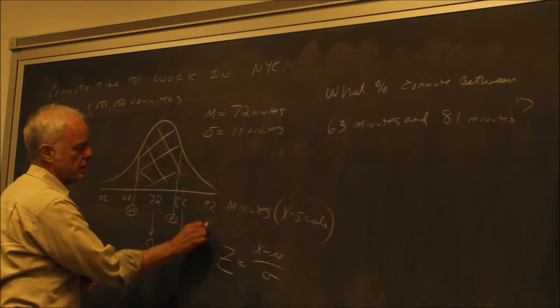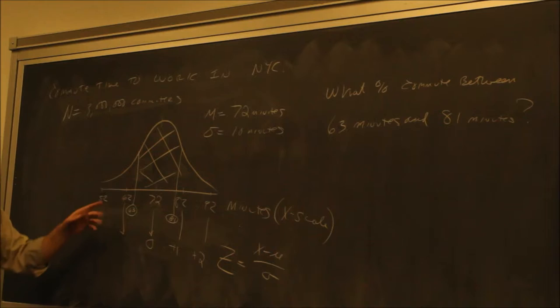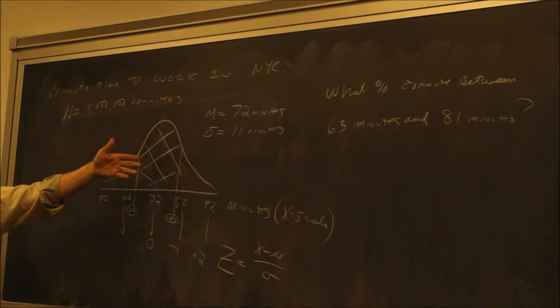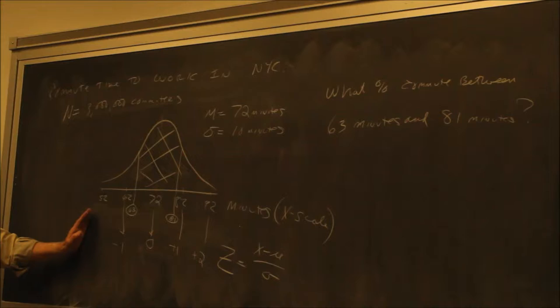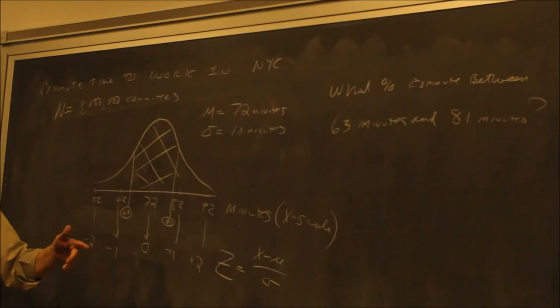So 82 is plus 1 on the z-scale, and 92 would be plus 2, because 92 minus 72 is 20 divided by 10. Over on the left, 62 minus 72 is minus 10 divided by 10, giving minus 1. Two standard deviations to the left gives z equals minus 2. So we've converted five reference points on the x-scale to the z-scale.